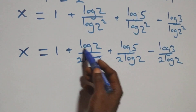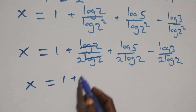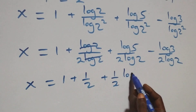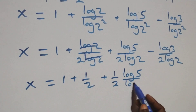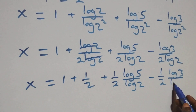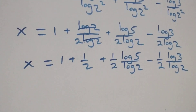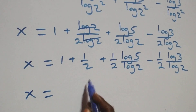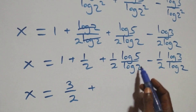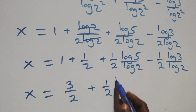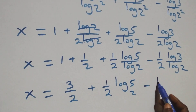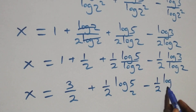Here, log 2 cancels log 2, and this becomes x equals 1 plus 1 over 2. Then we write log 5 over log 2 as one half times log 5 over log 2, and minus one half times log 3 over log 2. Applying change of base, this becomes x equals 1 plus 1 over 2, plus one half log₂5, minus one half log₂3.